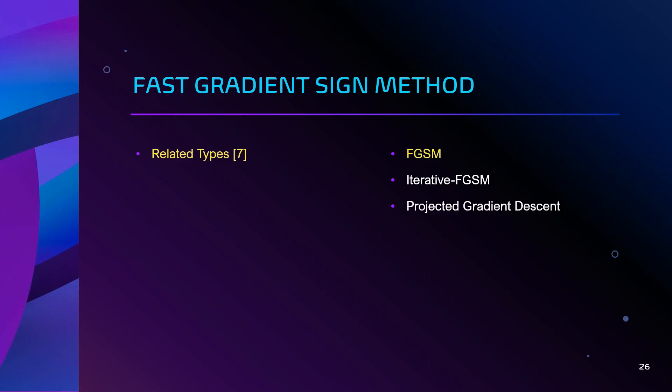In exploring methods for generating adversarial examples, several techniques are frequently discussed in the literature. One of the foundational approaches is the fast gradient sign method, or FGSM, which operates on the assumption that deep neural networks, or DNNs, exhibit high linearity, and introduces perturbations in a single step. Building on FGSM, the iterative FGSM, or IFGSM, enhances the attack by applying multiple iterations, which typically increases both the effectiveness of the perturbation and the computational requirements. The projected gradient descent, or PGD, method further extends FGSM by incorporating a random initialization step before performing iterative perturbations, helping find more effective adversarial examples. These methods highlight different strategies to exploit vulnerabilities in DNN models, emphasizing the balance between attack strength and computational resources.